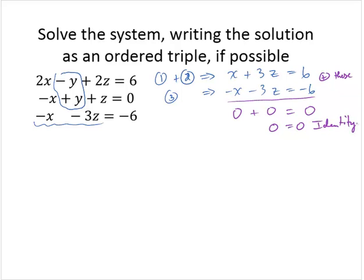So I get 0 equals 0, and this is an identity. When this happens, we know that the system has infinitely many solutions. Now how do we deal with that? It asks us to write the solution as an ordered triple, and we know we have many solutions.